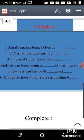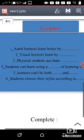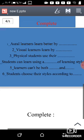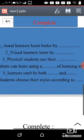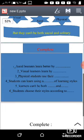Number four: Students can learn using a... of learning styles. You can go to the textbook, you can go to the page that we saw, and you can complete. Learners cannot be both... what are the two things we talked about? Students choose their styles according to... according to what do they choose their style? So I want from all of you to send me the answers in our classroom.